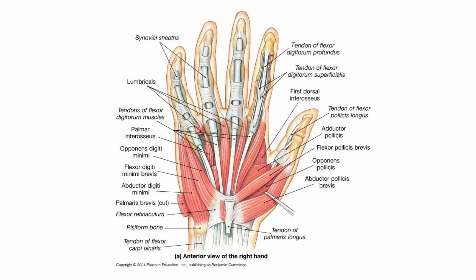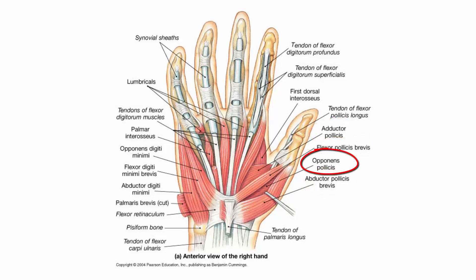The muscles of the thenar eminence consist of four muscles: the abductor pollicis brevis, the adductor pollicis, the flexor pollicis brevis, and the opponens pollicis. Opponens refers to opposition — the ability to touch your little finger with your thumb. This is what separates us from many animals: we have opposable thumbs. The way our thumb is situated, we are able to move it to the little finger, which helps us use tools.